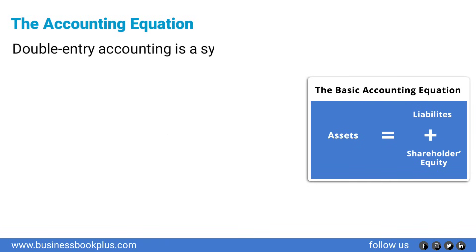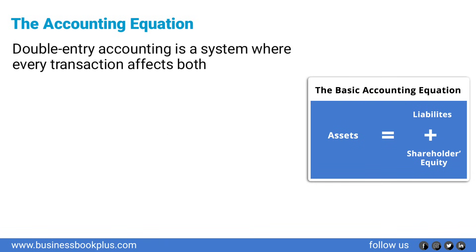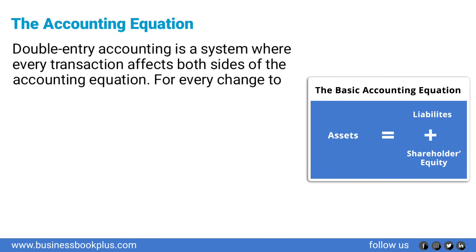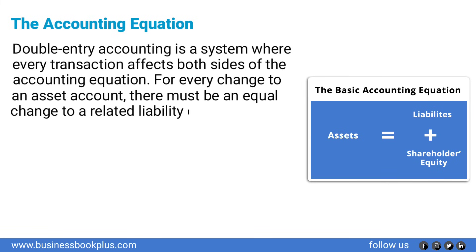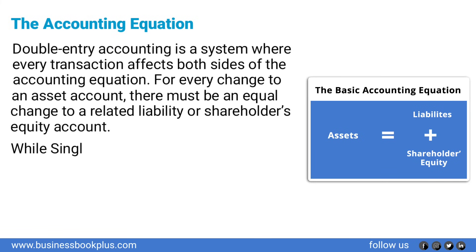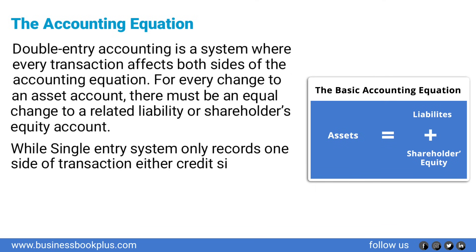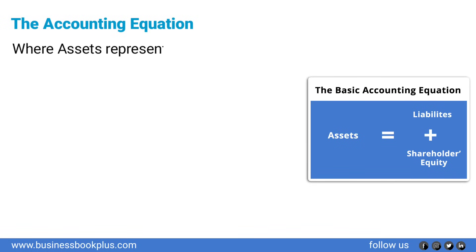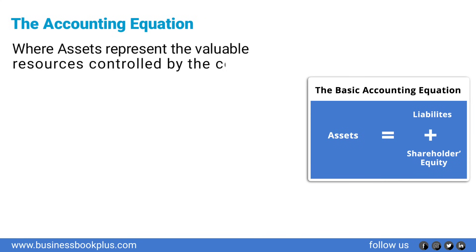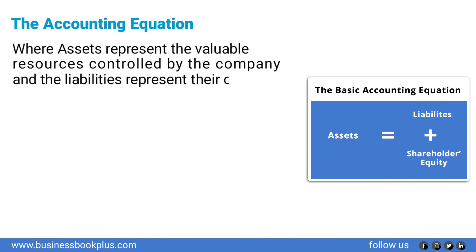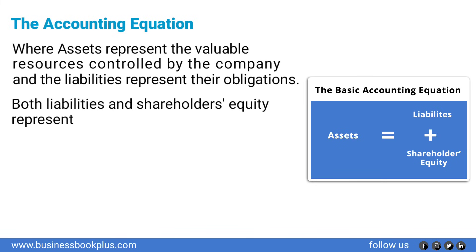Double-entry accounting is a system where every transaction affects both sides of the accounting equation. For every change to an asset account, there must be an equal change to a related liability or shareholder's equity account. The single-entry system only records one side of a transaction — either the credit side or the debit side. Assets represent the valuable resources controlled by the company, and liabilities represent their obligations. Both liabilities and shareholders' equity represent how the assets of a company are financed.